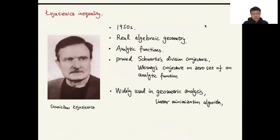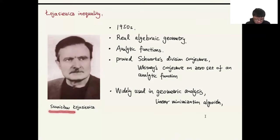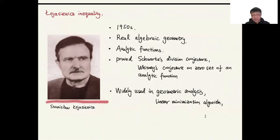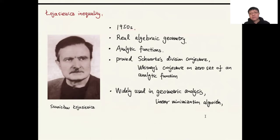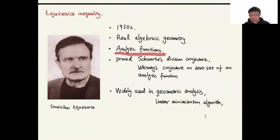So what is the Łojasiewicz Inequality? Let me give you some historic background. The Łojasiewicz Inequality was first proved by Stanley Łojasiewicz — here is a photo of him, which I downloaded from the Polish Academy of Science. This inequality was proved in the 1950s, and it is an inequality in real algebraic geometry about analytic functions.